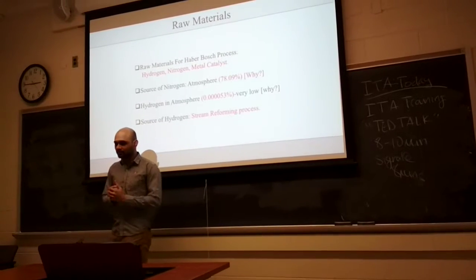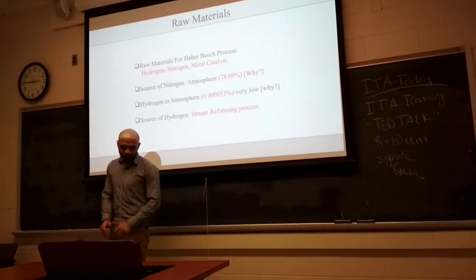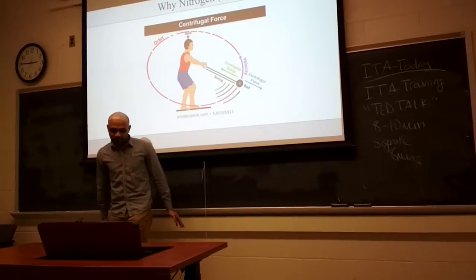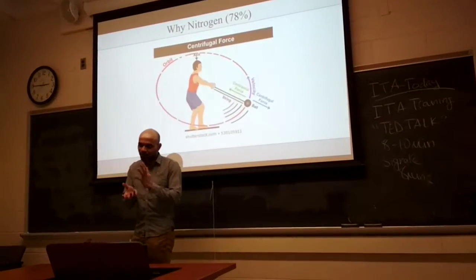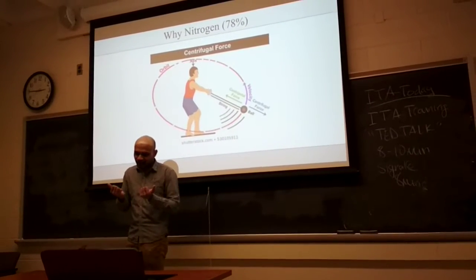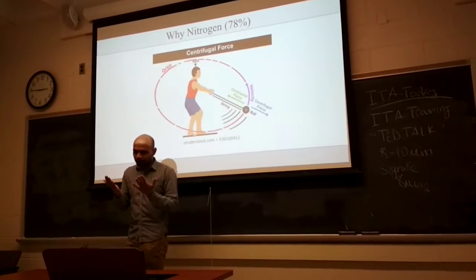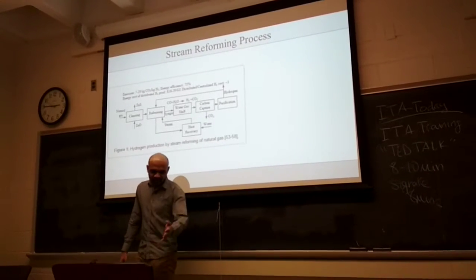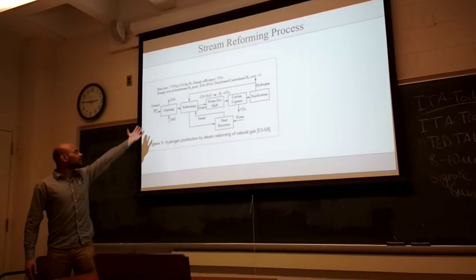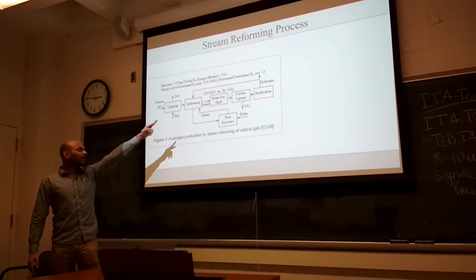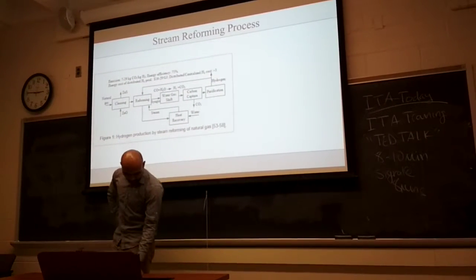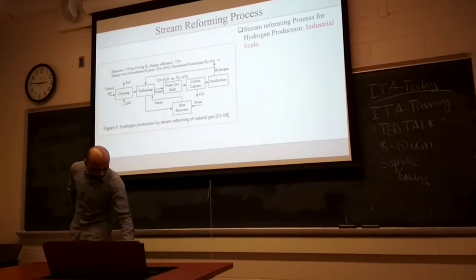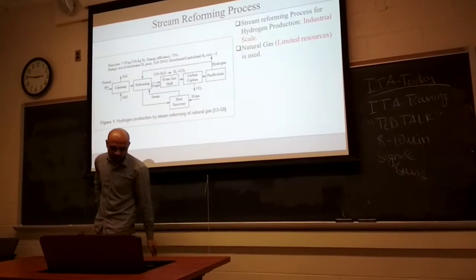The source of hydrogen — what is the alternative source? That will be the steam reforming process. Why is nitrogen so high in our atmosphere? Because nitrogen has bigger molecular weight, much more mass, so it will not escape the atmosphere due to centrifugal force. In the steam reforming process, you need to use natural gas, and after that you will produce hydrogen and carbon dioxide. But carbon dioxide — you know that is the greenhouse gas — that's why it's not good for our environment.